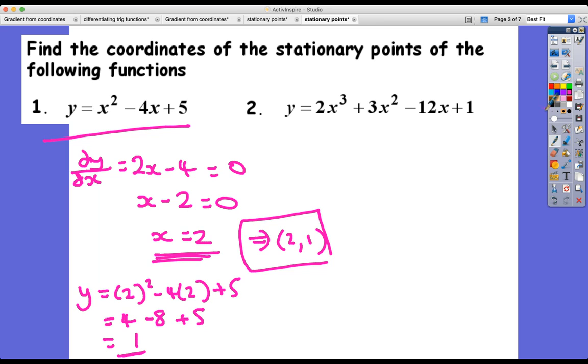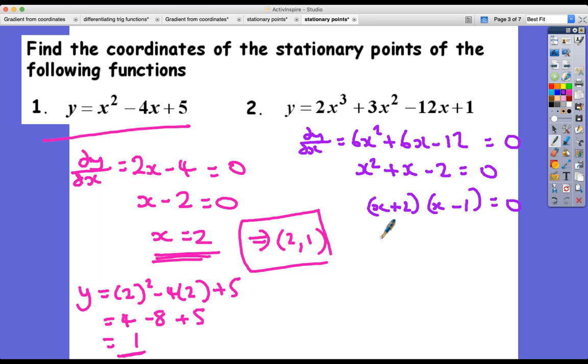And my second one, let's do it in purple. dy/dx is 6x² + 6x - 12. Again I can see a common factor glaring at me there which is 6, so it's x² + x - 2 = 0. Let's see if it factorizes. I'm looking for two numbers that have a product of -2 and add up to 1, so they're going to be 2 and -1. That tells me that the x coordinates are -2 and 1.